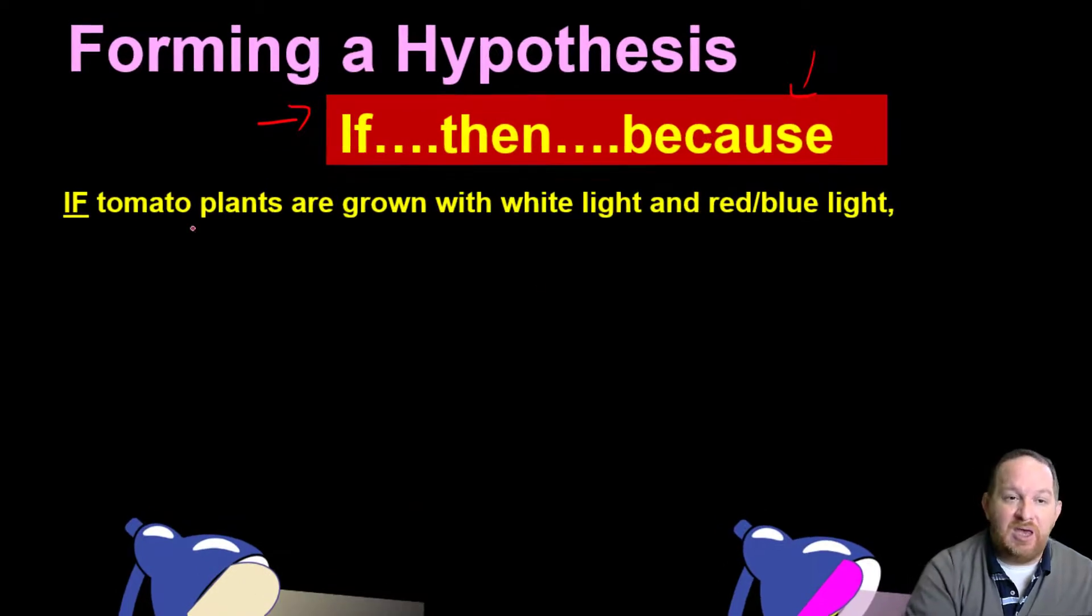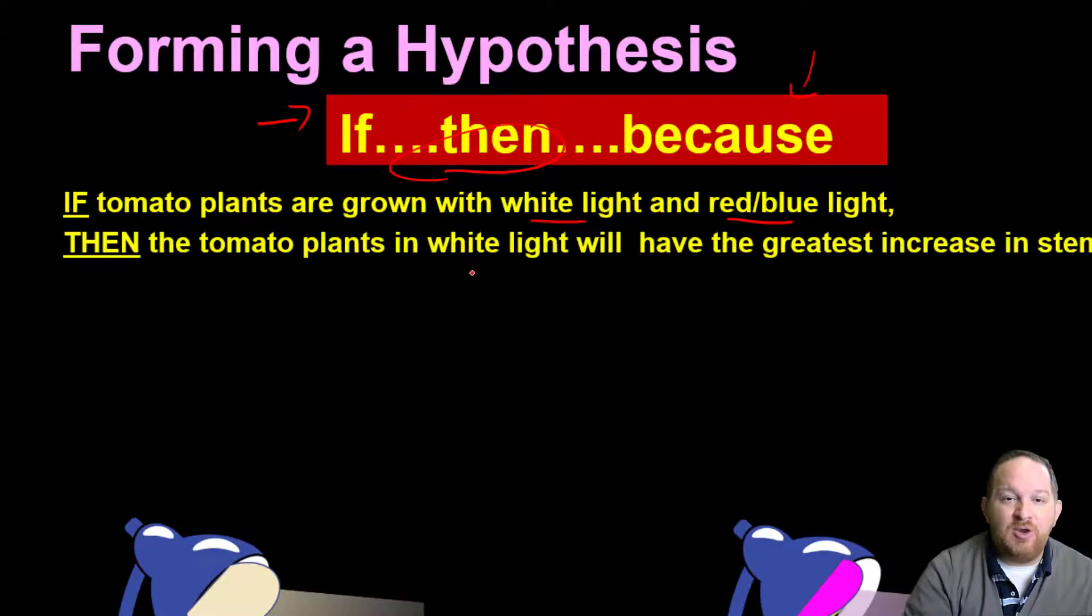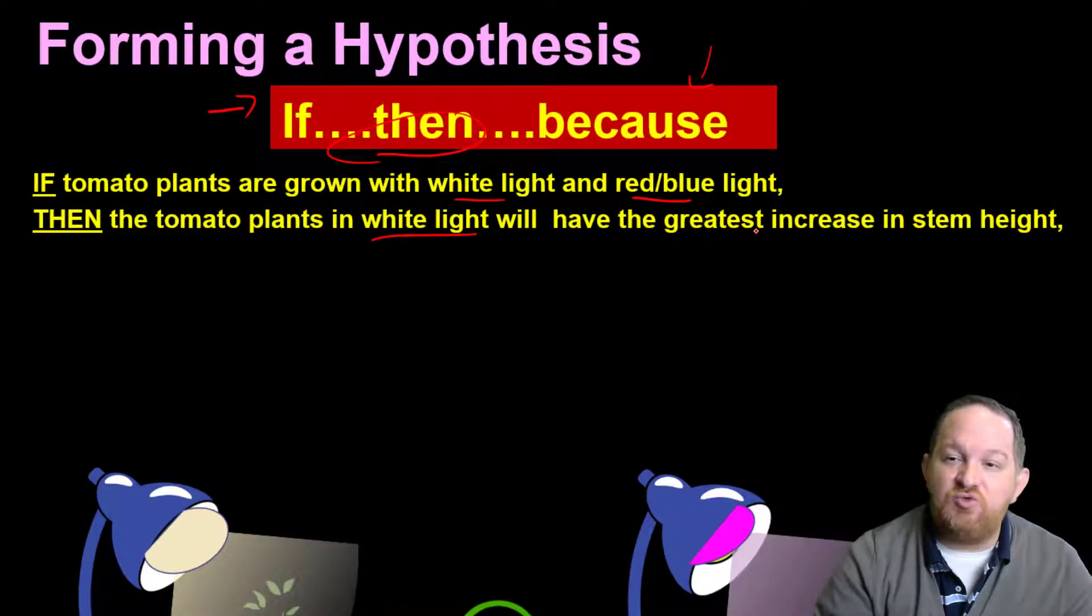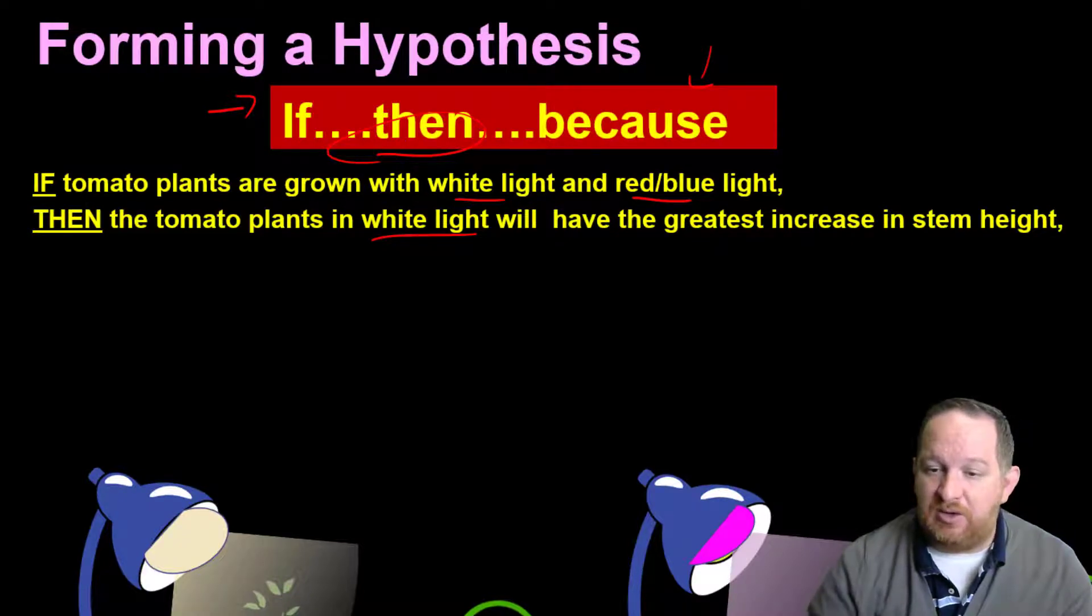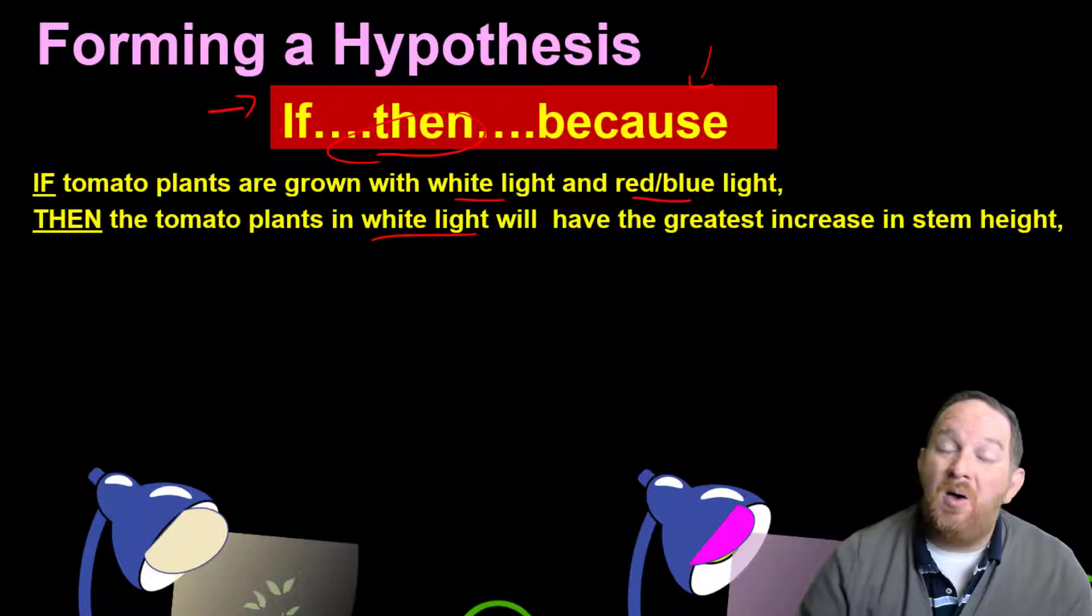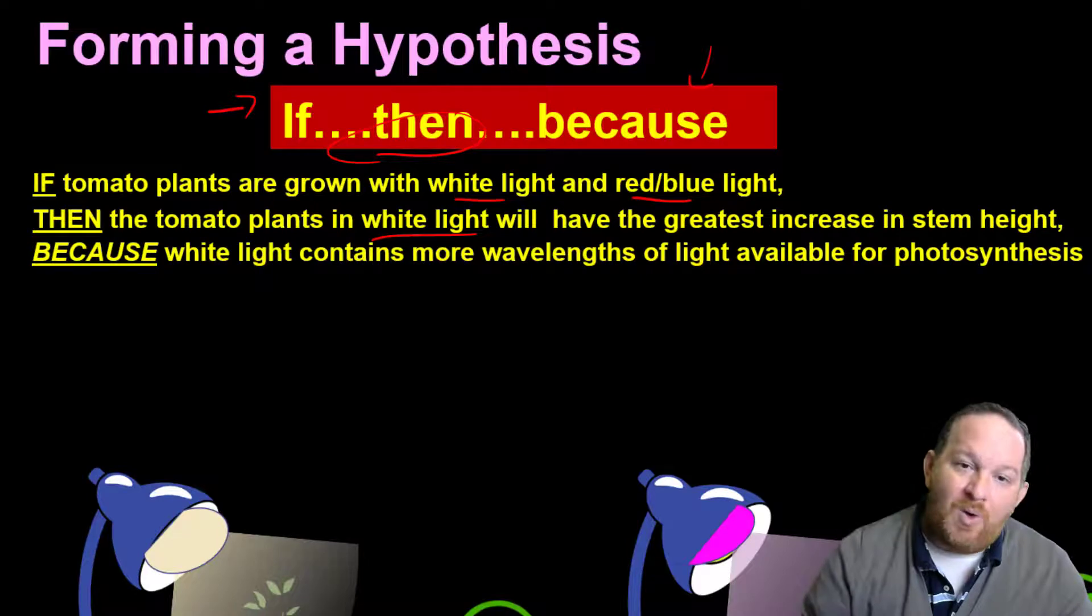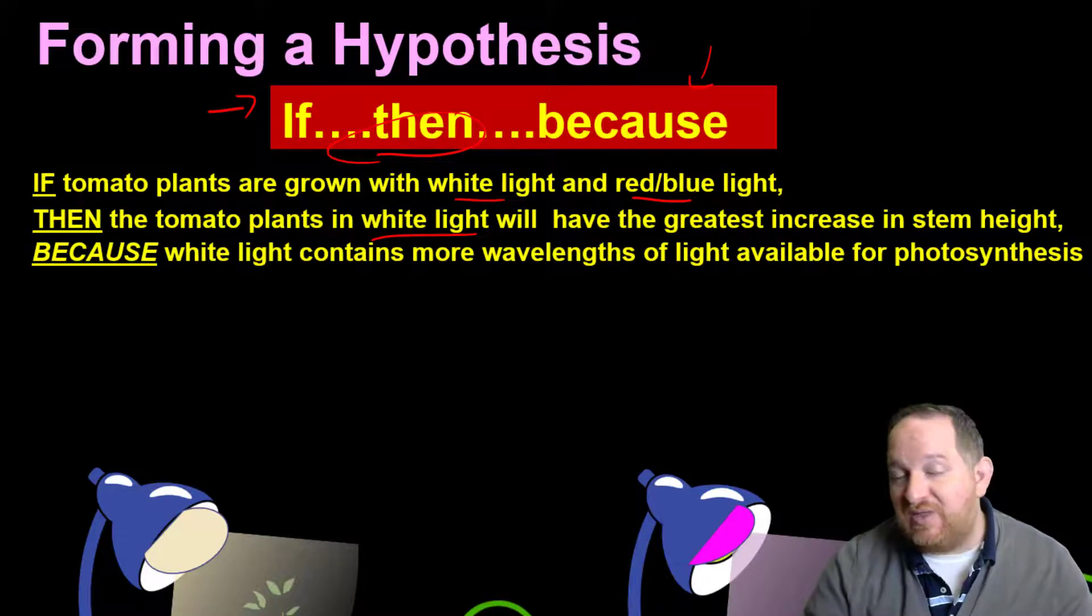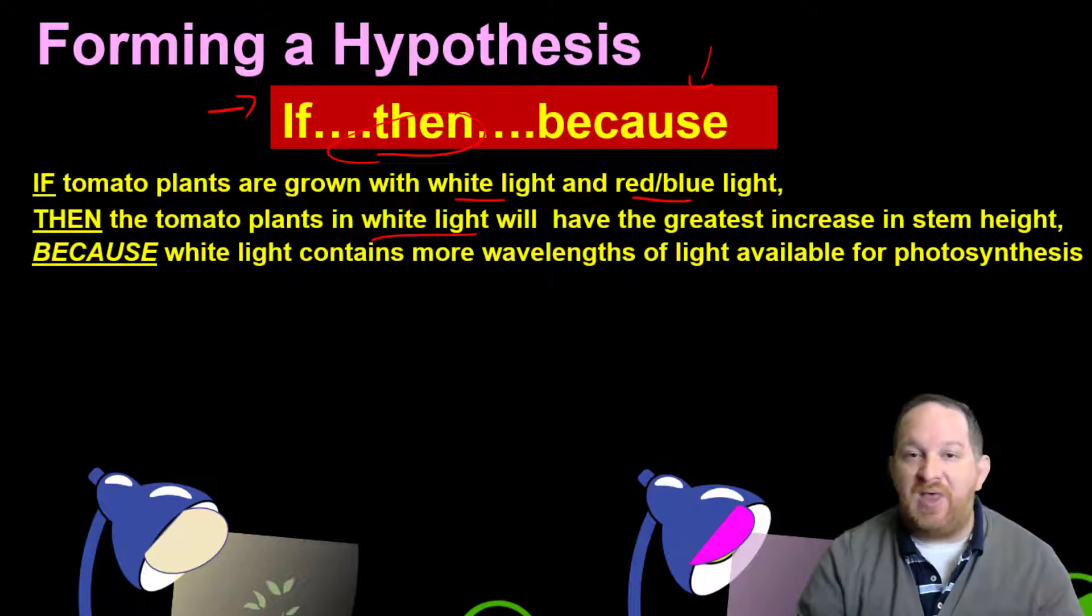So with my tomato plants. If tomato plants are grown with white and red-blue light, then, now here's where you're going to make your prediction, then the tomato plants in white light will have the greatest increase in stem length. All right, so I've narrowed it down and I'm saying I'm just going to measure the stem length here. Then you need to give a reason. Well, I think this is because white light contains more wavelengths of light available for photosynthesis so that the plants will grow. Okay, so I've come up with a hypothesis.